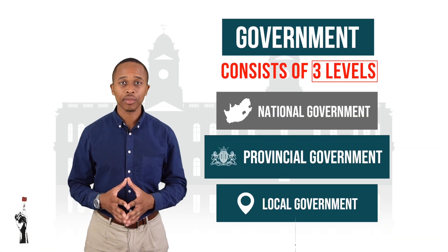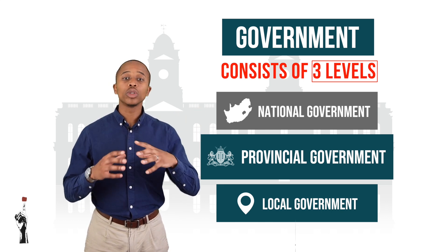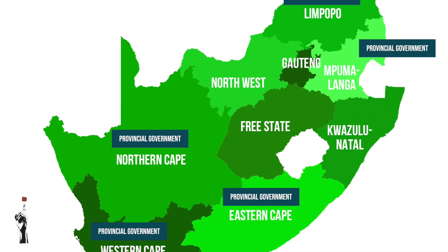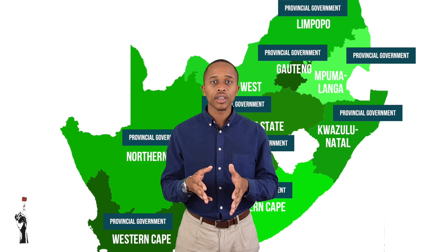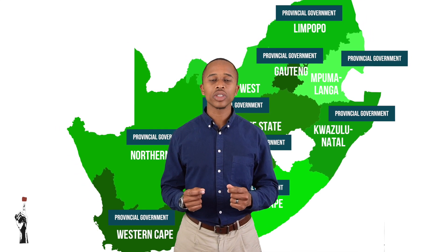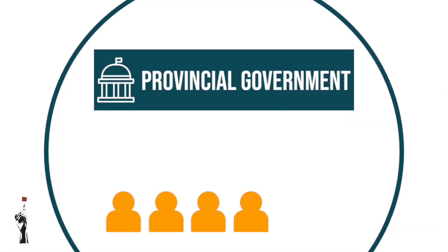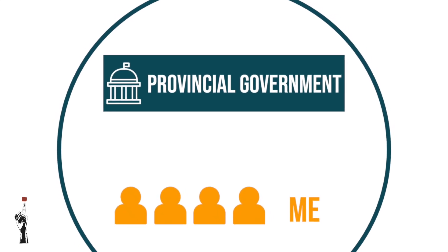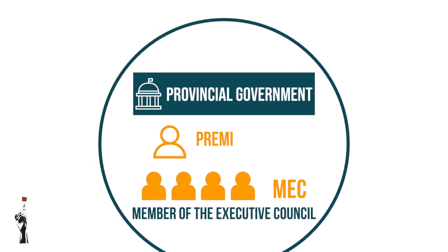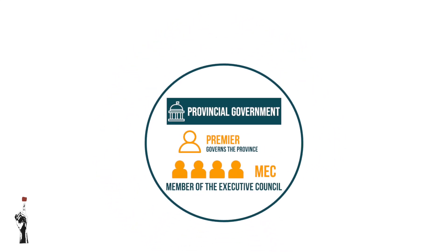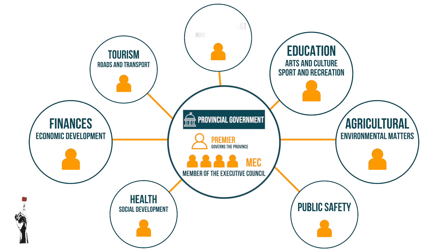Moving on to provincial government: all nine provinces have their own government called the provincial government. They are responsible for making sure things run smoothly in the specific province. Members and political parties are also elected every five years. The executive council — also called the MEC, or Member of the Executive Council — is led by the premier of the province, and each member manages a specific department.